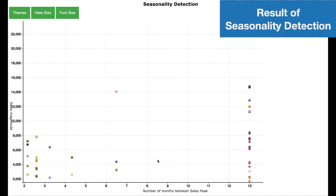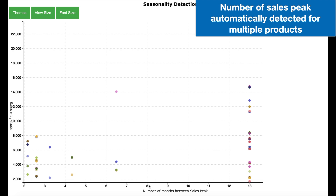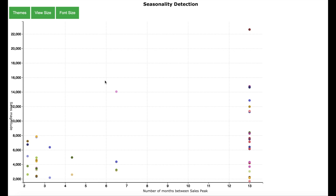Here is the result of the seasonality detection algorithm applied to multiple products. On the x-axis you have the time taken for the sales peak to repeat itself, and on the y-axis you have an indication of how high the peak is. Our product Rabbit Nightlight is situated here, and the algorithm has estimated that the sales peak repeats every 12 to 13 months, meaning there is one sales peak per year.